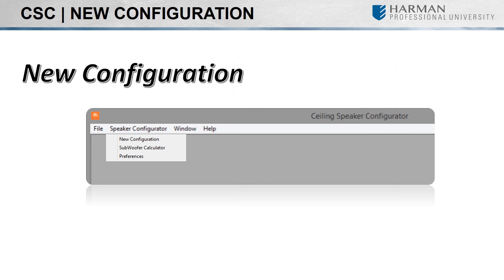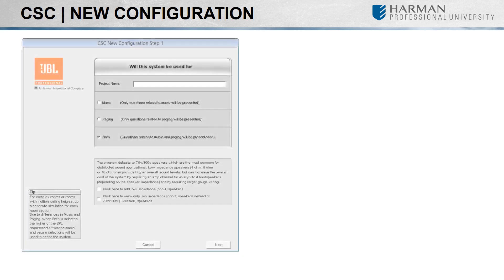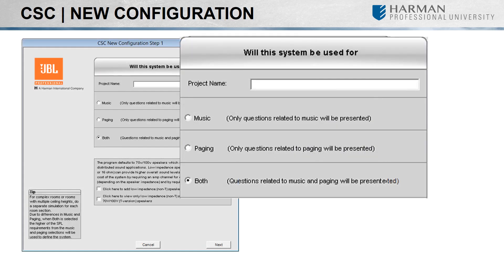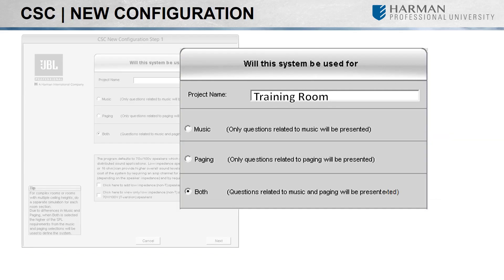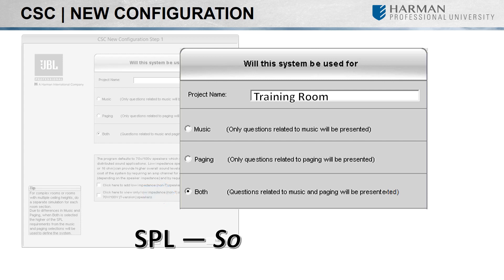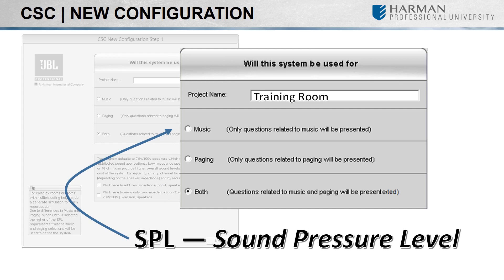Next, we will go to the new configuration found under the Speaker Configurator menu. Let's enter a project name such as Training Room. Here's a tip: if you are needing ceiling speaker suggestions for complex rooms or rooms with varying ceiling height, then it is recommended that you run multiple simulations for each section of the room or for each individual room. Below the project name field, you will find three radio buttons that allow you to dictate what the intended use is for ceiling speakers — be it music, paging, or both. Selecting the both option will cause CSC to use the higher SPL requirement from the music and paging selections to define the system.